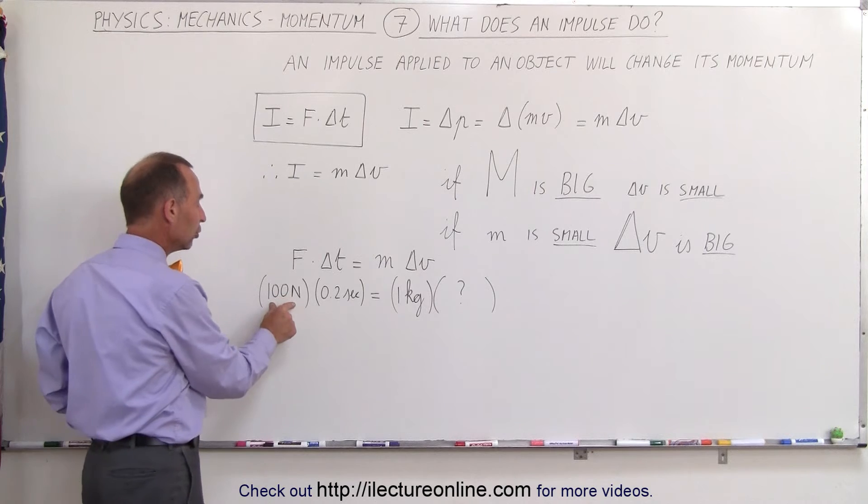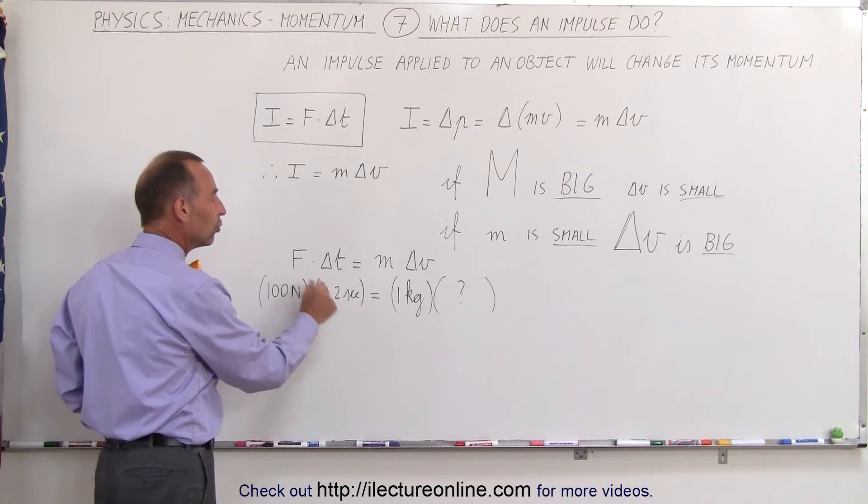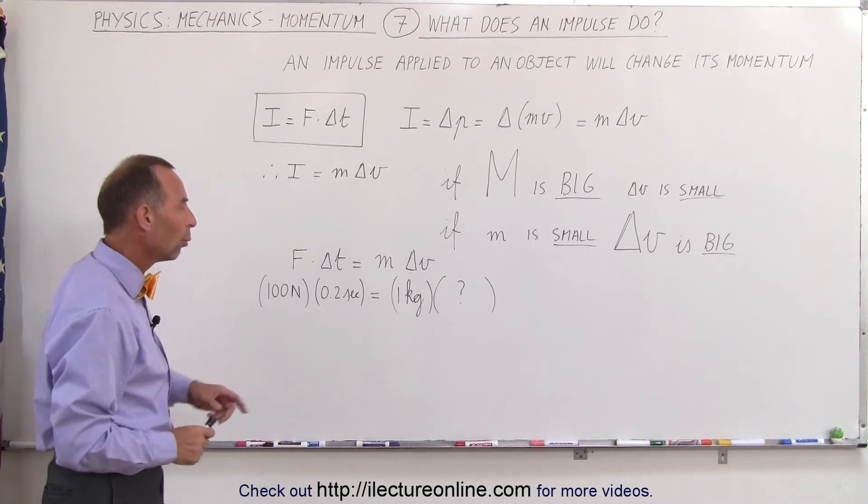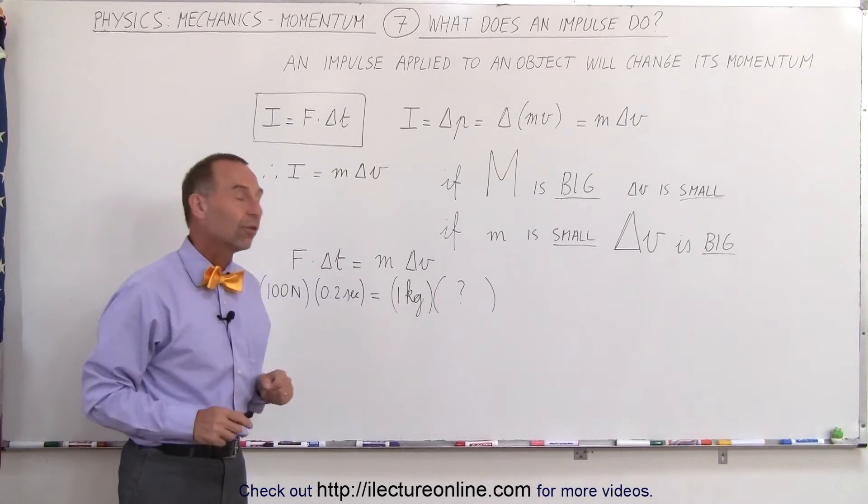The force is 100 newtons, the time is 0.2 of a second, so two tenths of a second, and the mass of the object is 1 kilogram. What will be the change of this object's velocity?